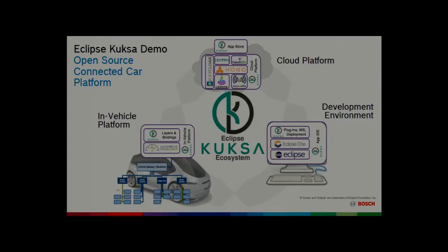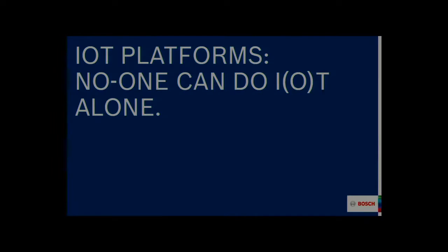Automated cars still need a lot of data from the cloud. They need exact maps and also event data — for example, a crash — and they want to know as much as they can in advance about what is in front of them. So the typical automated car is connected.